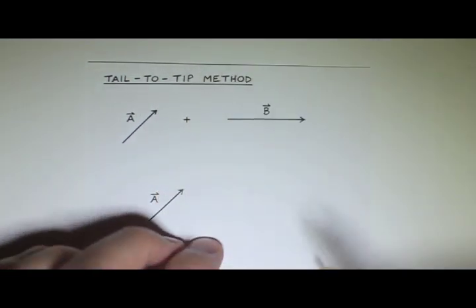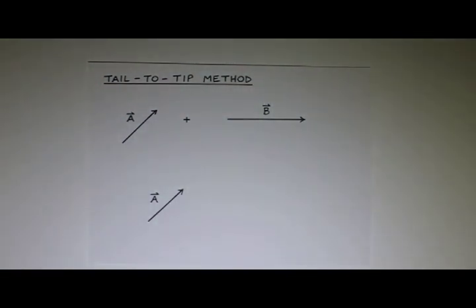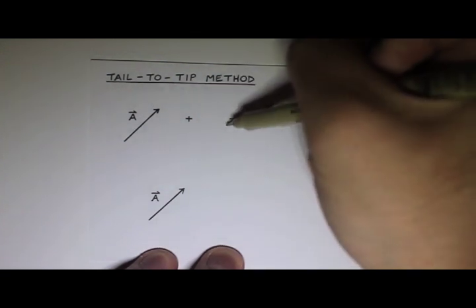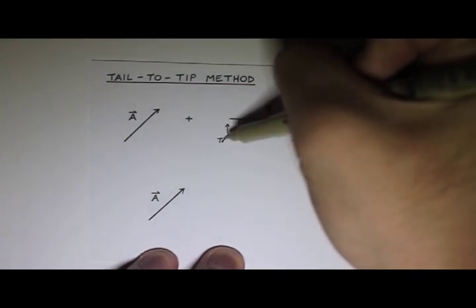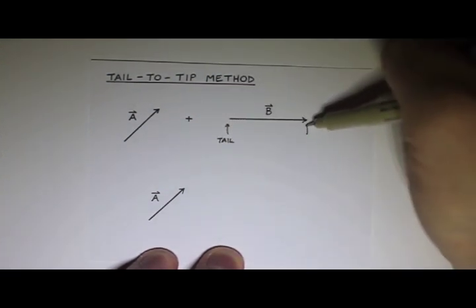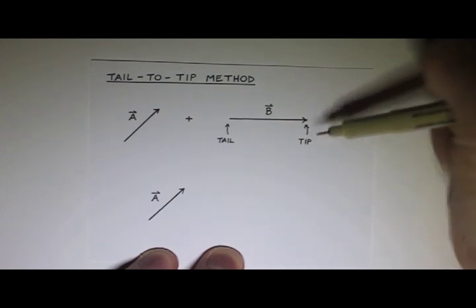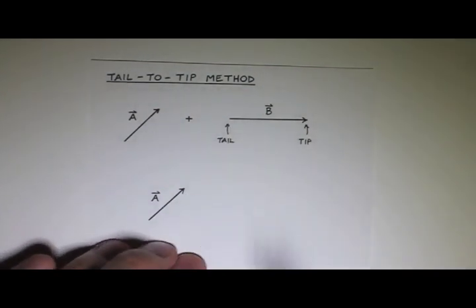And then, since it's called the tail-to-tip method, just kind of do what the method says. So you take the tail of B, this end of a vector is its tail, and this end of the vector is the tip.